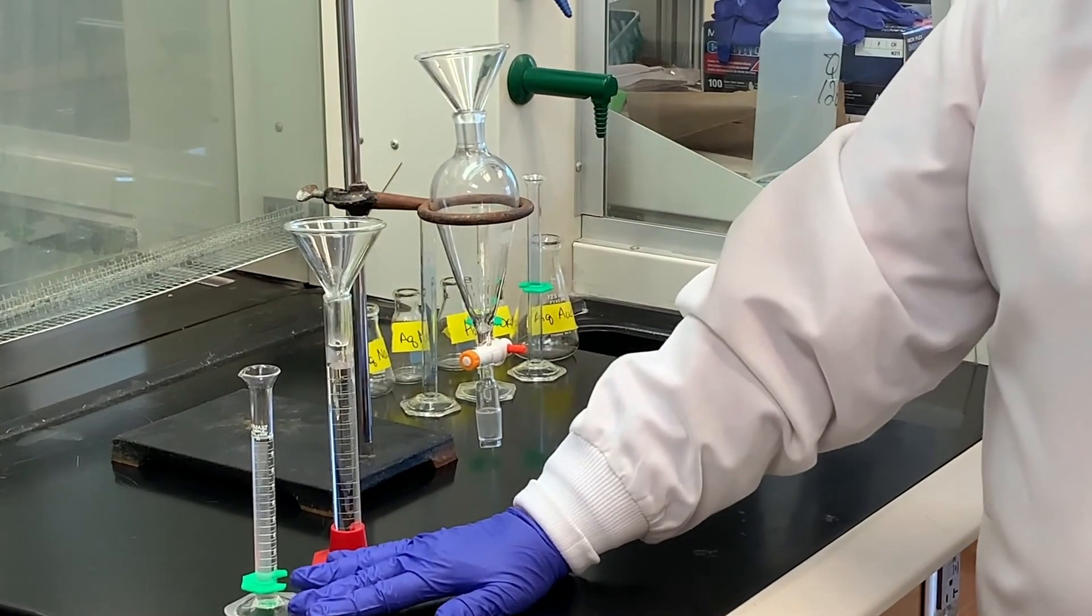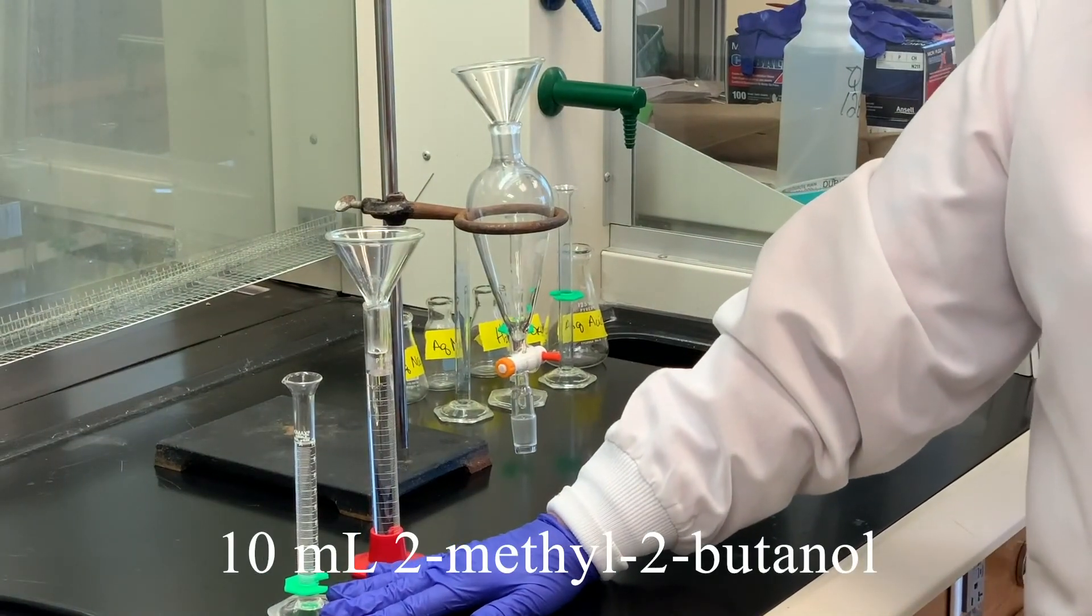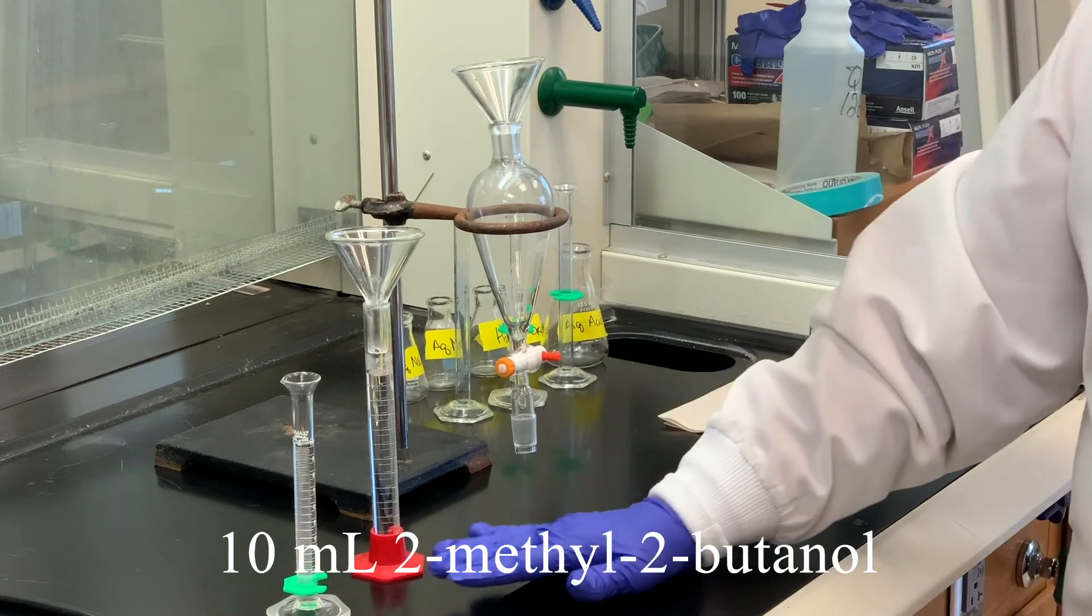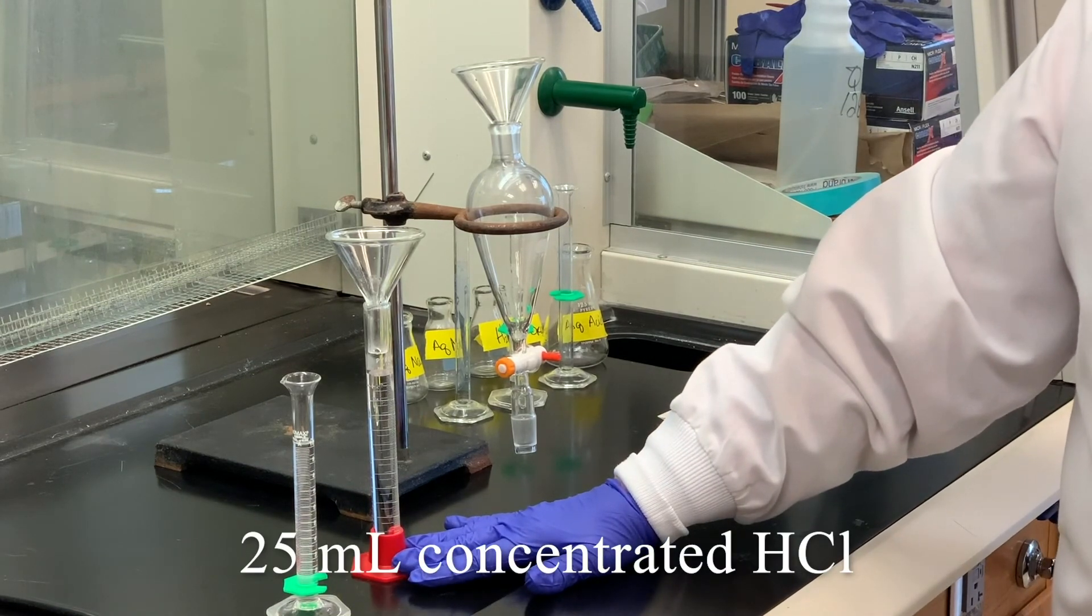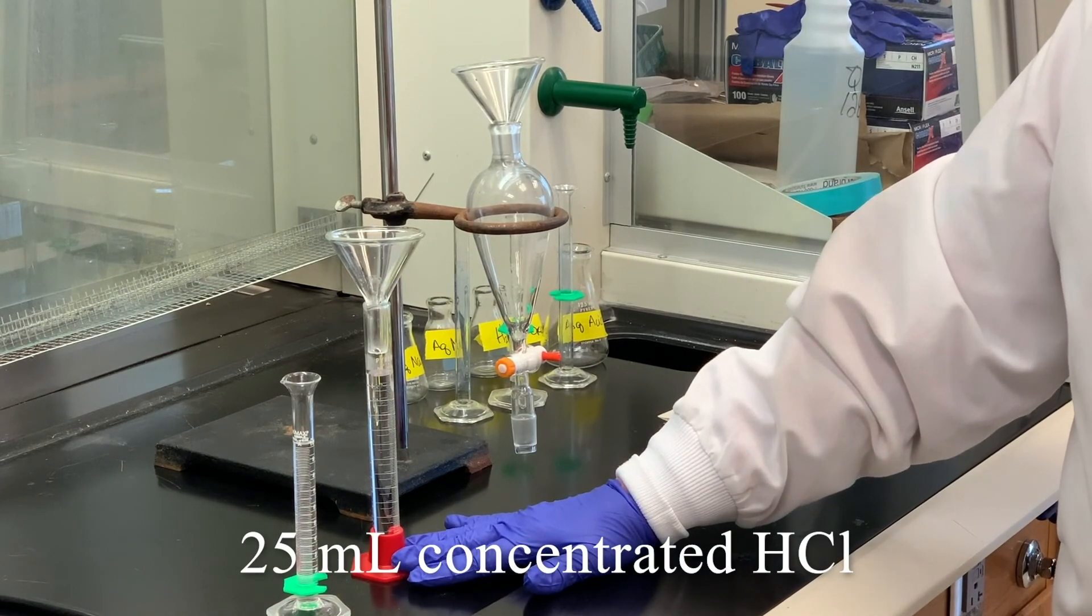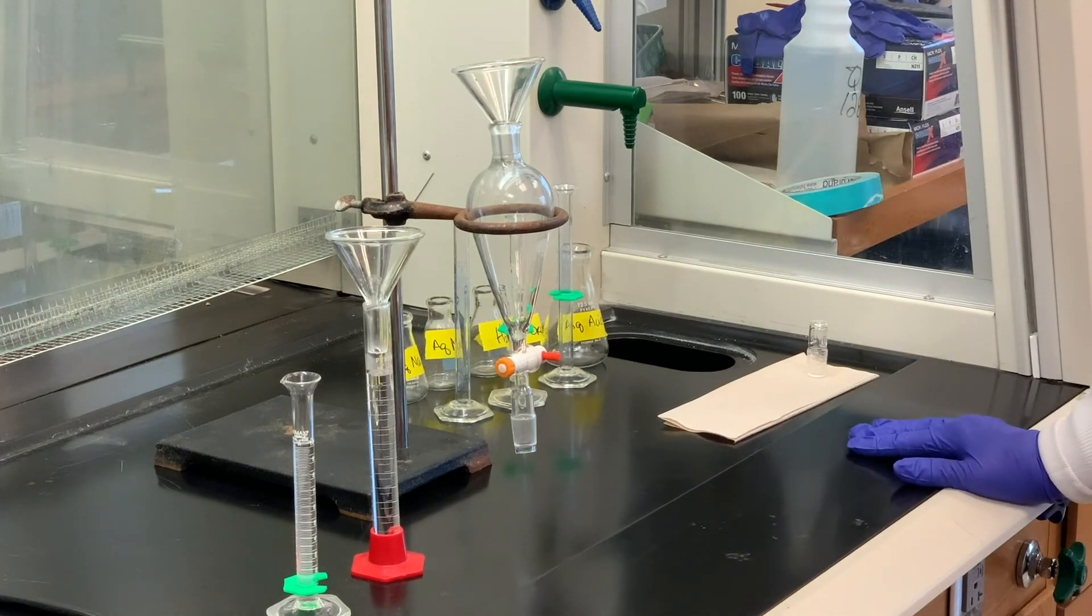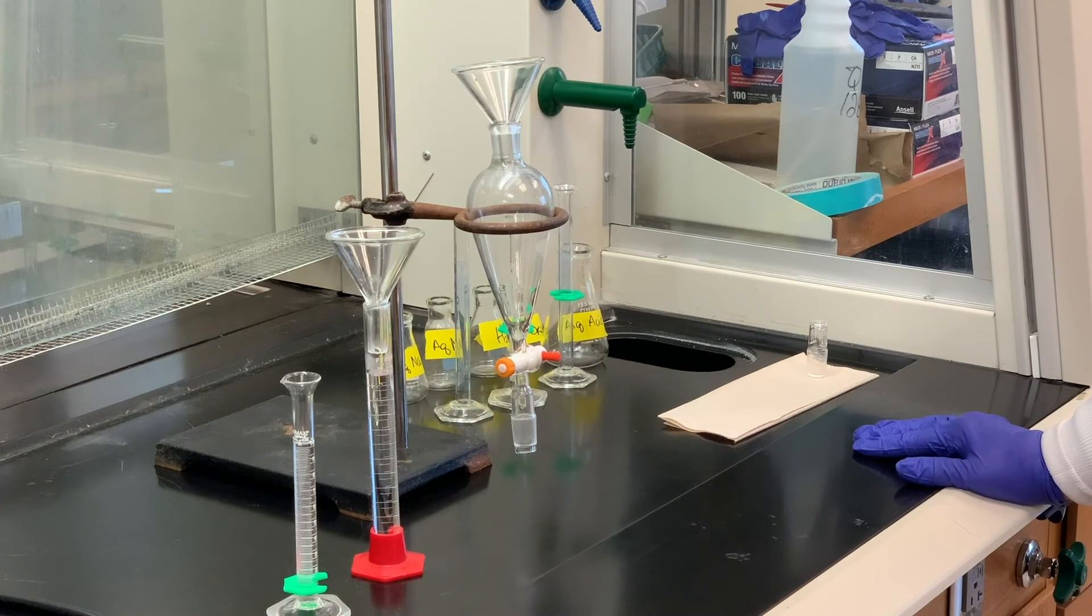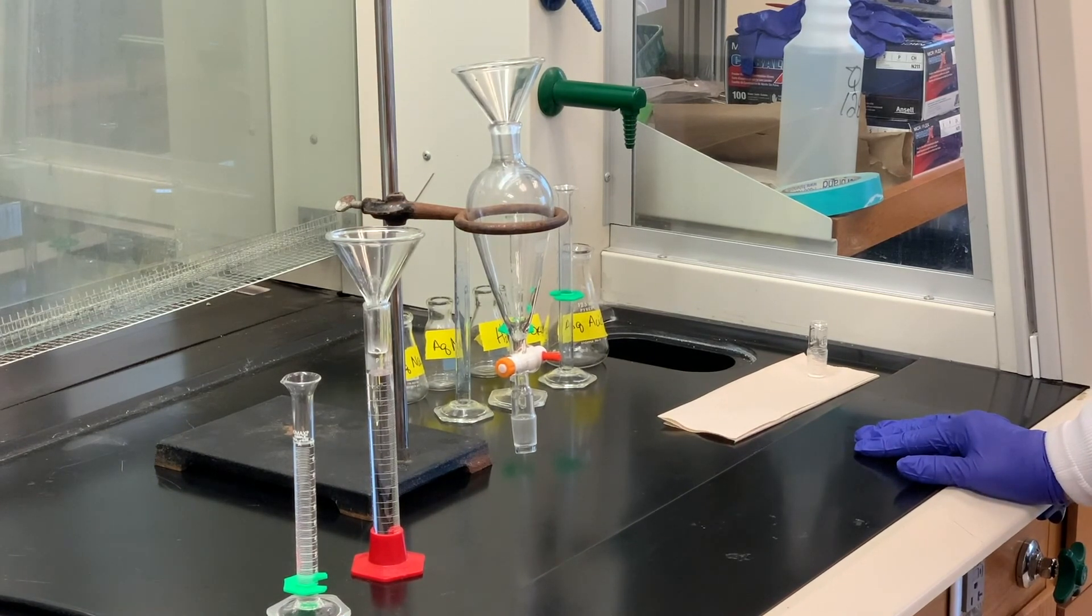What I have here is 10 milliliters of the 2-methyl-2-butanol, and we're going to add to that 25 milliliters of concentrated hydrochloric acid. This is a type of SN1 reaction where we can take typically a tertiary substrate, in this case the alcohol, and we're going to combine it with hydrochloric acid.